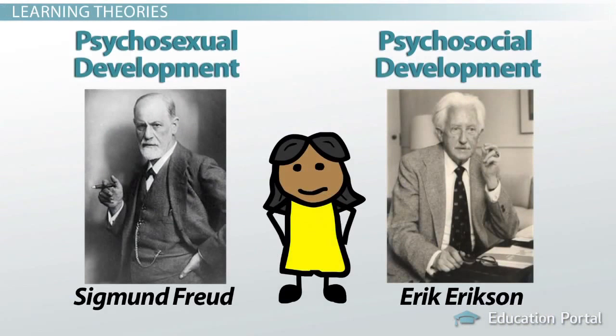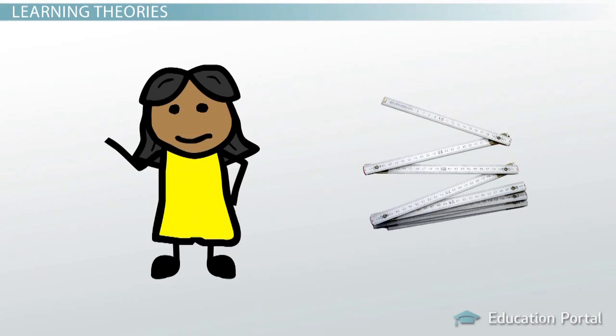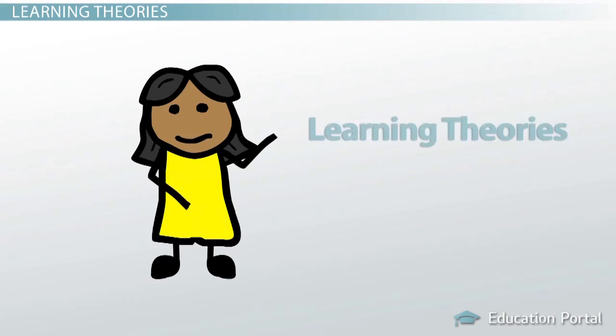As a reaction to the lack of empirical evidence to support the claims of psychoanalytic theory, psychologists became increasingly interested in developing a more scientific approach. In order to do this, some researchers began to study only those things that could be measured and quantified. This led to the emergence of learning theories.